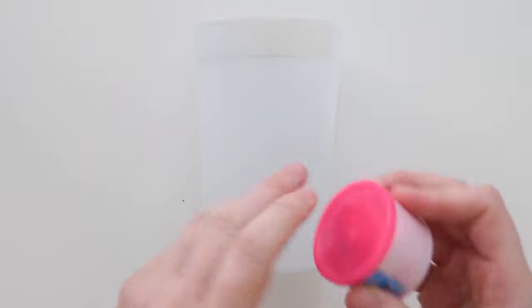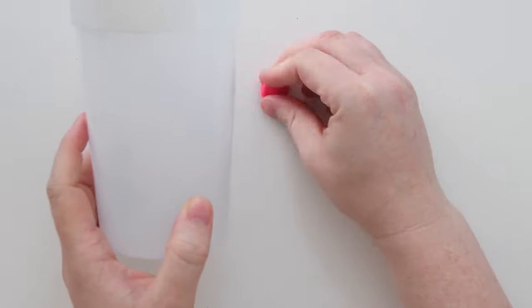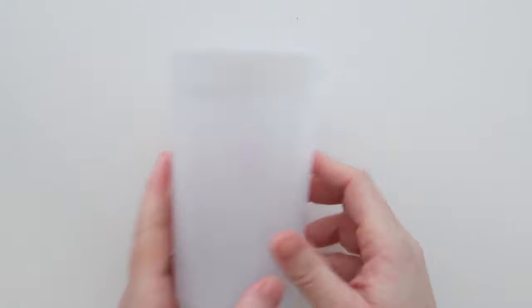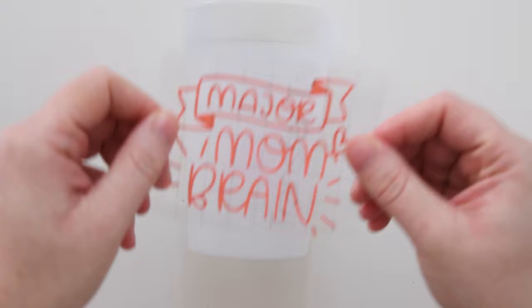Now have you ever made a cup or tried to make a cup and it rolls so you can't put your vinyl down? Grab a small piece of Play-Doh, put it down on your table or your surface and then put your cup on top of the Play-Doh and it makes it so it doesn't move.